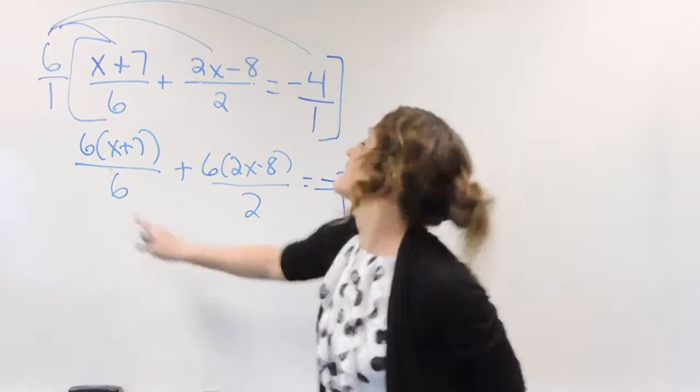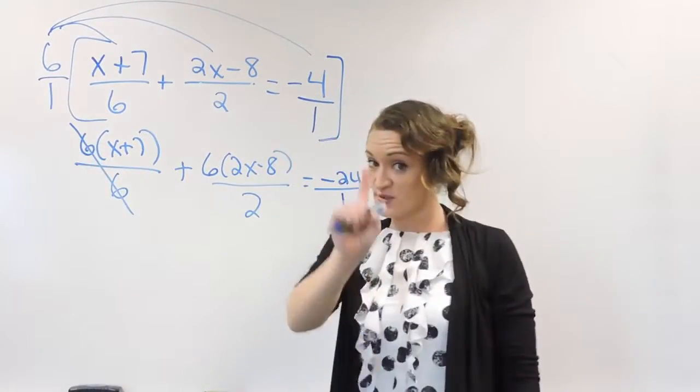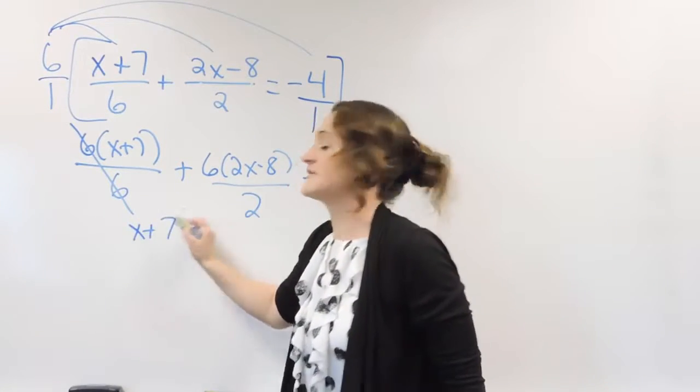Alright, so let's do this. So 6 divided by 6, that cancels because that's a 1, leaving us with the x plus 7.